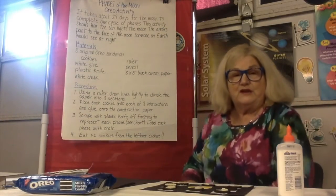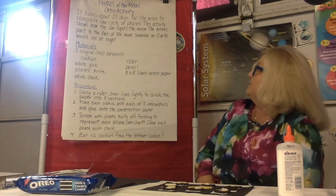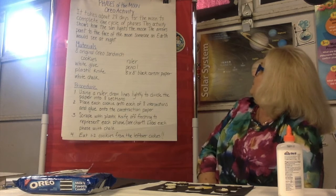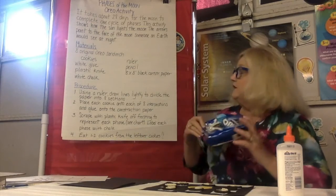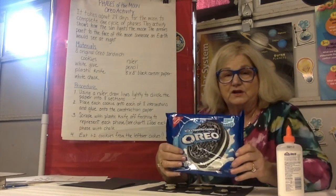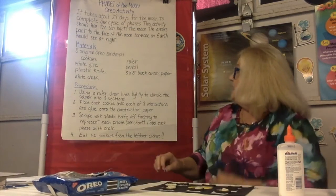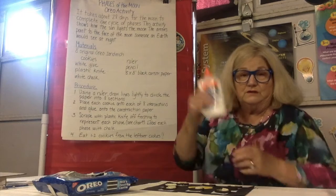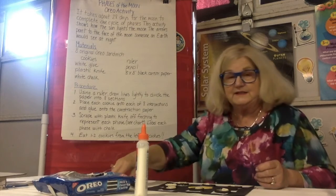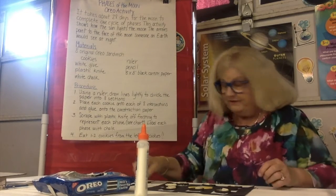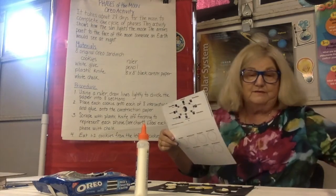I'm going to do an activity to show how the sun lights the moon, and arrows point to the face of the moon that someone on earth would see at night. For this you'll need eight Oreo sandwich cookies — they have to be chocolate with white frosting inside — some white glue, a piece of black construction paper, and a plastic knife.